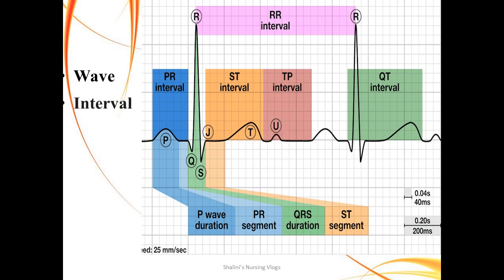The next term is interval. An interval is the time between two different points, which can also include an electrical event — a positive or negative deflection. Examples include the PR interval, the ST interval from the J point through the T wave, and the TP interval.